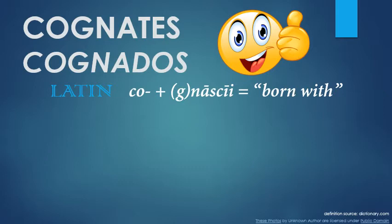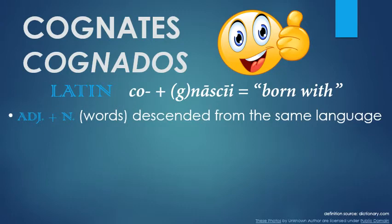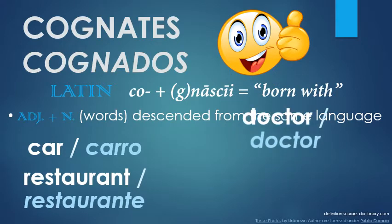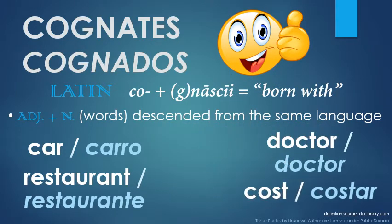It can also, more generically, suggest that two things are similar. However, it is most commonly used, both as a noun and adjective, in its grammatical sense, describing words that have descended from the same language. For example: car and carro, restaurant and restaurante, doctor and doctor, cost and costar, and everybody's favorite — no and gnome. You can see that some of these words have changed a little bit by a letter here or there, and others are exactly the same.